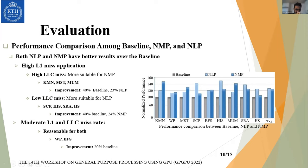Applications with high L1 miss and low LLC miss, such as SCP and histogram, are more suitable for NLP execution and achieve around 40% improvement over the baseline and 24% improvement over NMP. For the last category — WP and BFS applications, which are reasonable for both NMP and NLP — both structures achieve improvement of around 20% over the baseline.